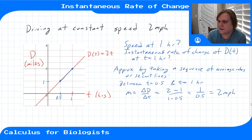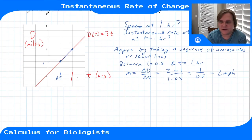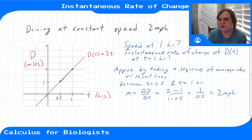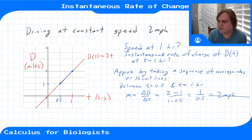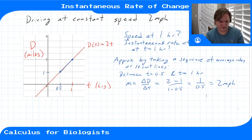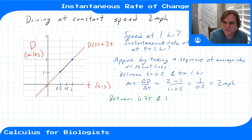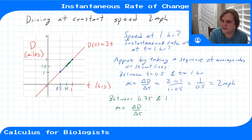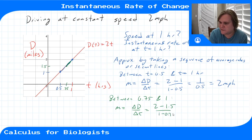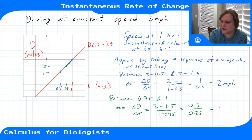The average rate of change between time 0.5 and time 1 is two miles per hour, which makes sense because that was our constant driving speed. We can keep going — let's use an even shorter interval. Between t = 0.75 and t = 1, the slope of the secant line is Δd/Δt = (2 − 1.5) / (1 − 0.75), which gives 0.5 over 0.25, or again two miles per hour.